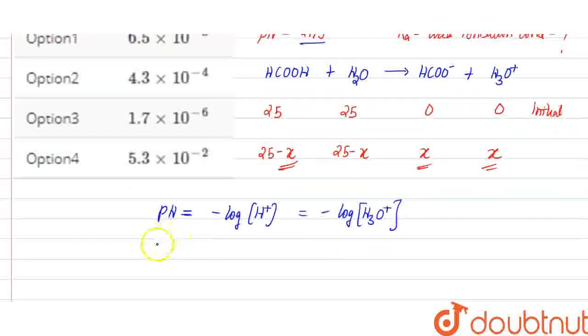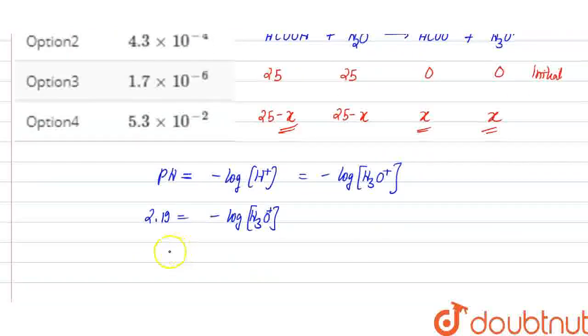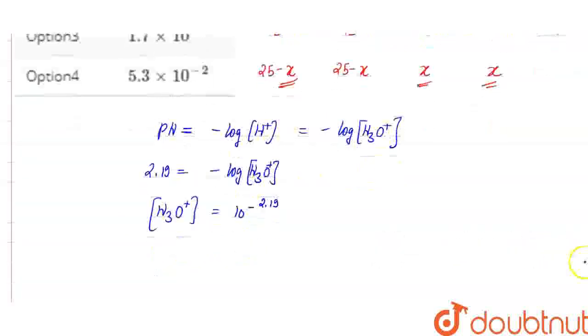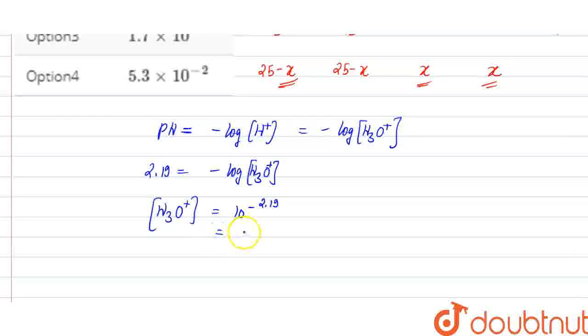If I write it here, then 2.19 equals minus log [H3O⁺]. When I remove this concentration, H3O⁺ will be 10 to the power minus 2.19. If I solve this, it will be 6.45 × 10⁻³.